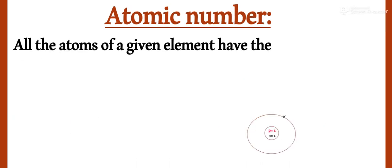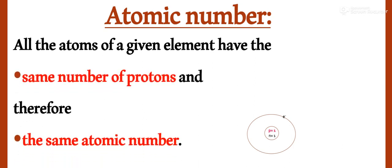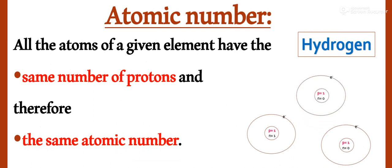All the atoms of a given element have the same number of protons and therefore the same atomic number. If we look at hydrogen's element and take different atoms, students can see the same number of protons — this is why the atomic number of atoms will be the same. We are not talking about neutrons; neutrons can be different. But the protons in the nucleus are the same, which is why the atomic number is the same.